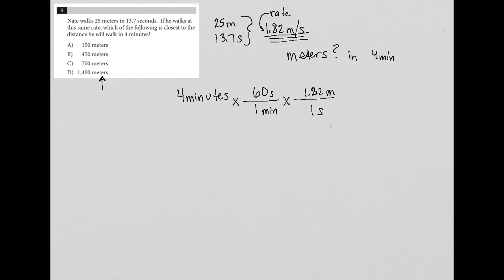So what have I done? I've created an equation here where my units that I don't want, minutes and seconds, will cross cancel. But the unit that I do want, the meters, is here. And I've included all of the information that I've been provided, the four minutes and then the rate here.